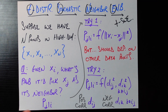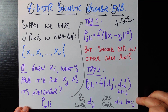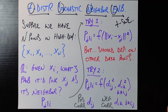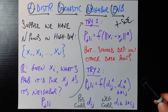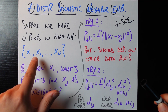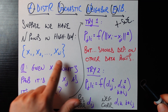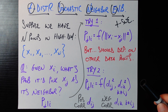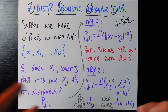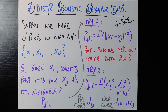The idea is that we come to this method with a bunch of data points in a pretty high dimensional space. We have n data points, x1, x2, all the way to xn, and each of these are vectors in a very high dimensional space. You can think of dozens or hundreds or even thousands of dimensions for each of these vectors.